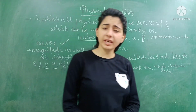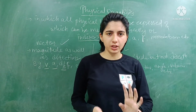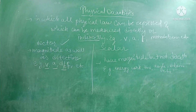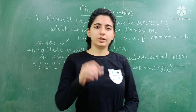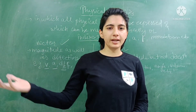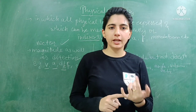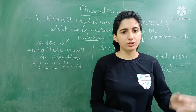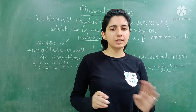So, physical quantities — or 'Bhautik Rashi' in Hindi — are of two types: Sadish (vector) and Adish (scalar) rashi. I have explained both with examples. For exams, you could be given a random quantity and asked whether it is scalar or vector, or you could be asked to give the definition — which has magnitude and direction (vector), or which has only magnitude and not direction (scalar).